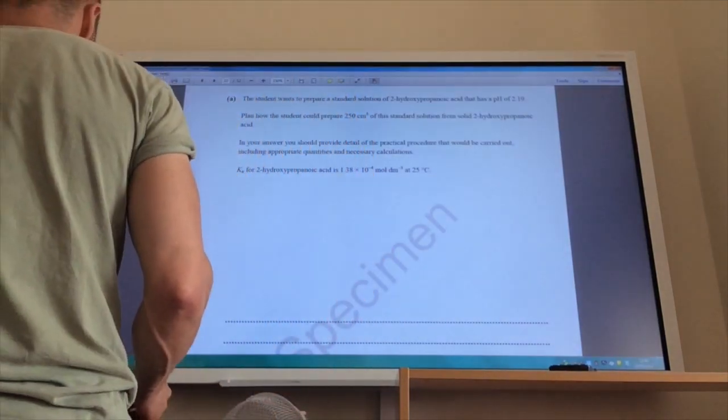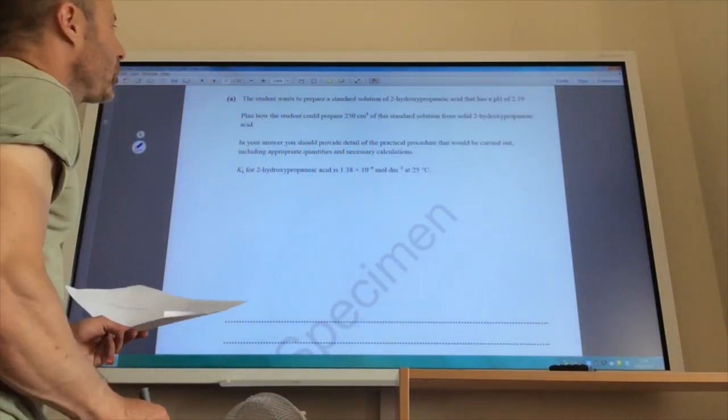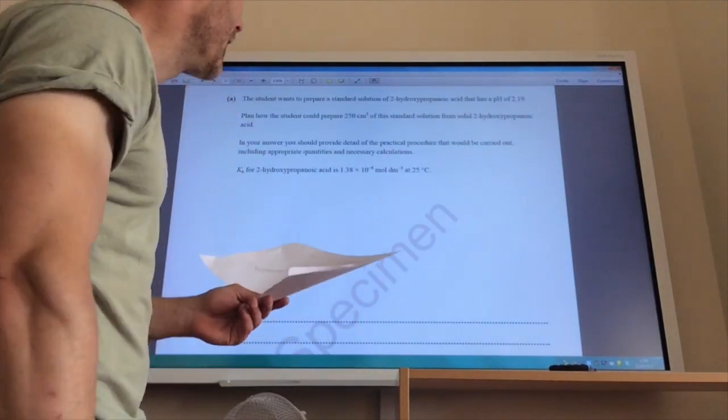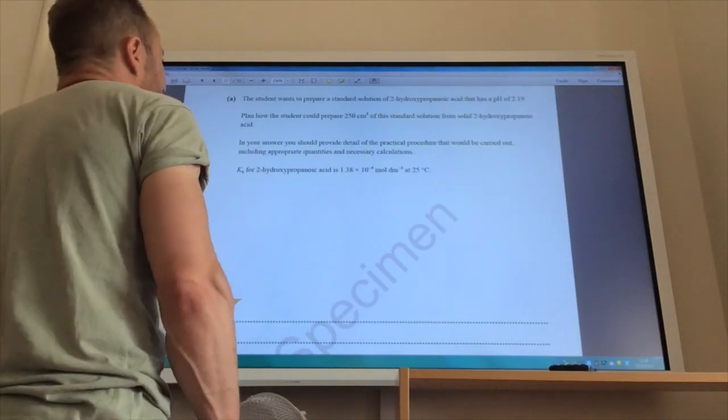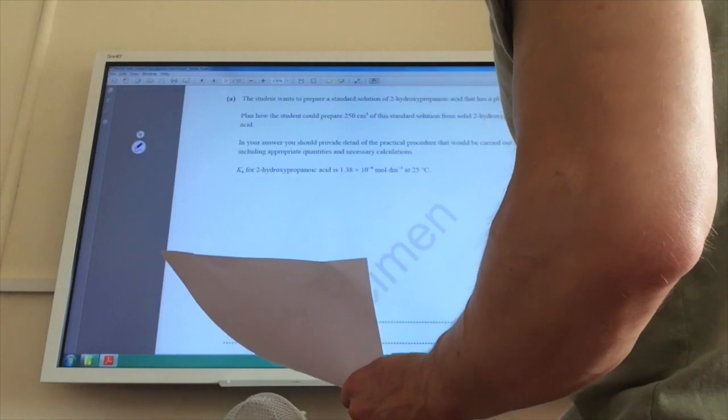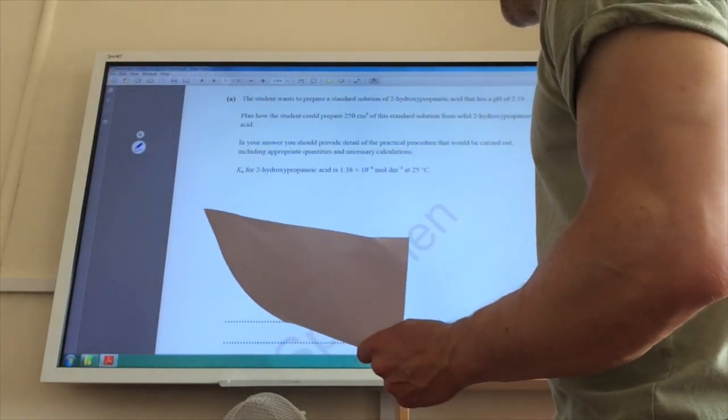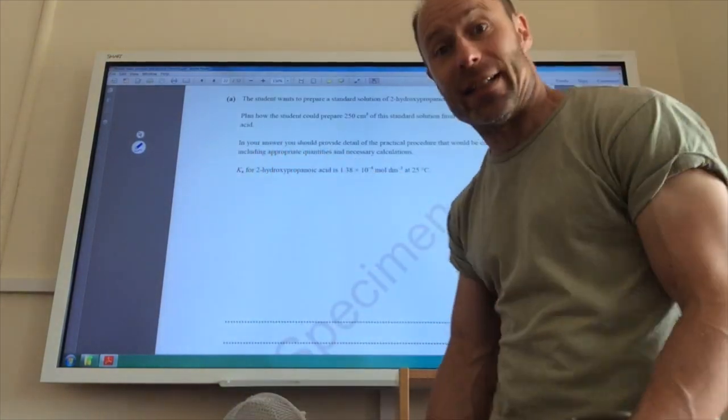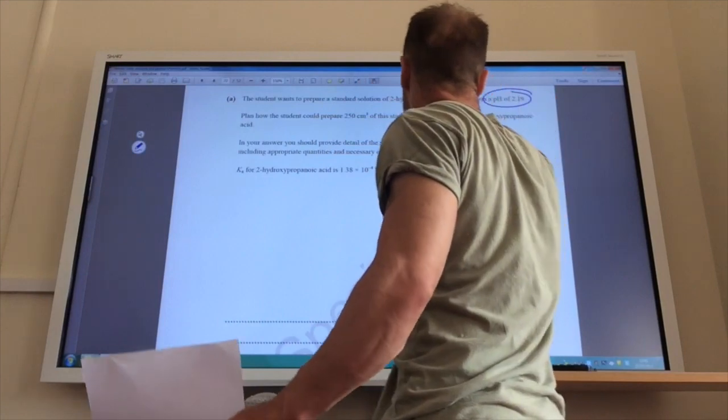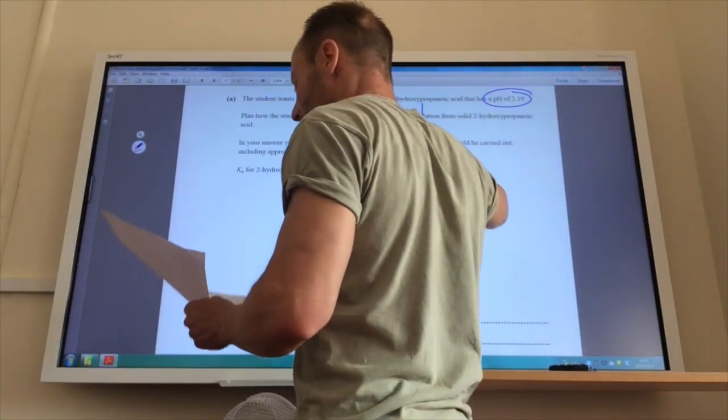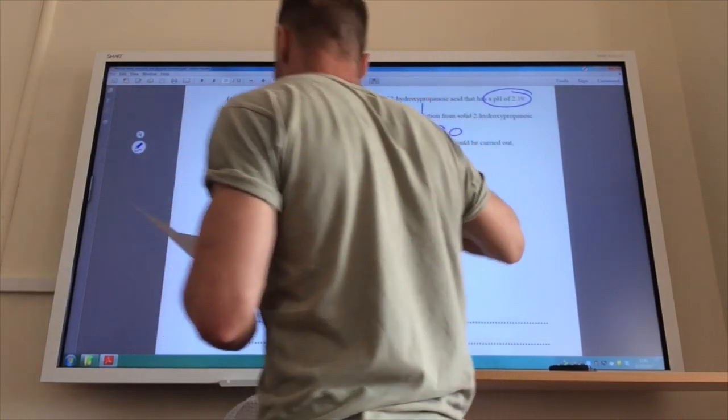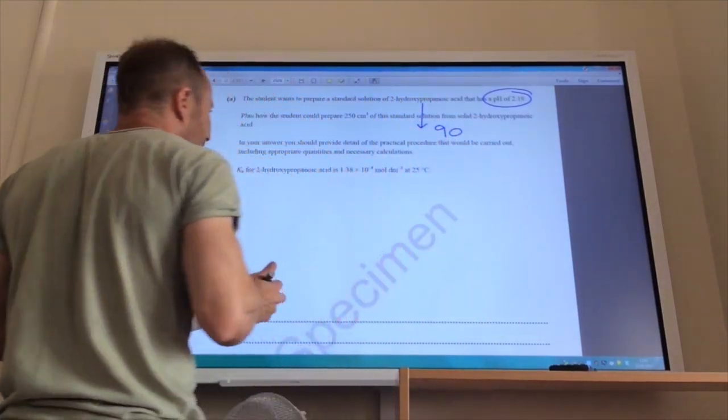So moving on to question 20 then. A student wants to prepare a standard solution of 2 hydroxypropanoic acid with a pH of 2.19. Plan how we can prepare 250 cm3 of this standard solution from the solid acid, including the practical procedure that would be carried out and quantities and everything. OK, so it's told me what the pH is. The first thing I need to do is work out also, let's work out the molar mass of 2 hydroxypropanoic acid. And if you do that, you will find it's 90.